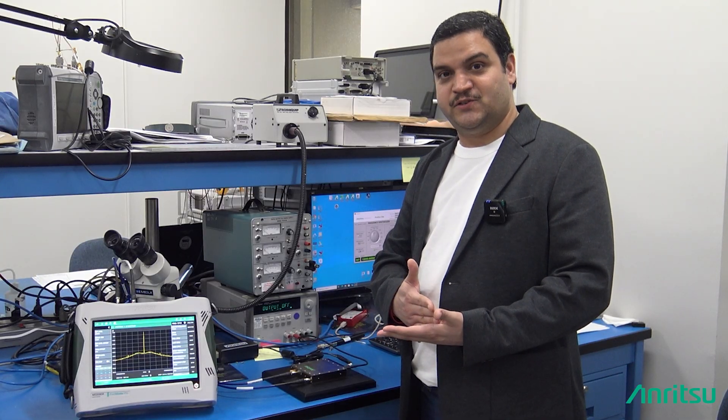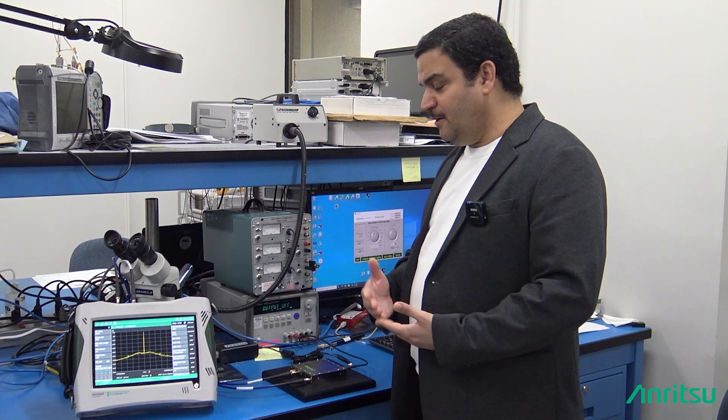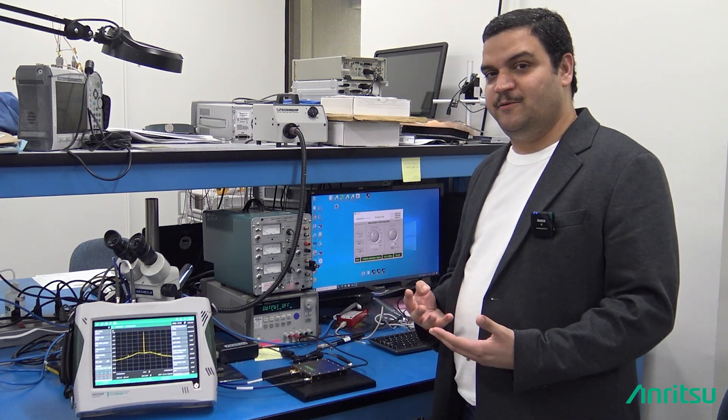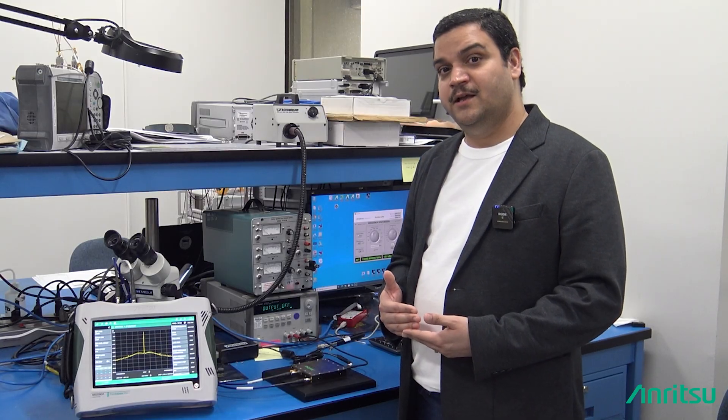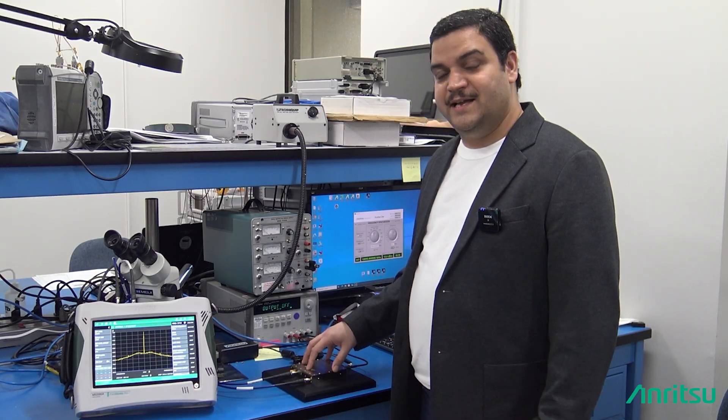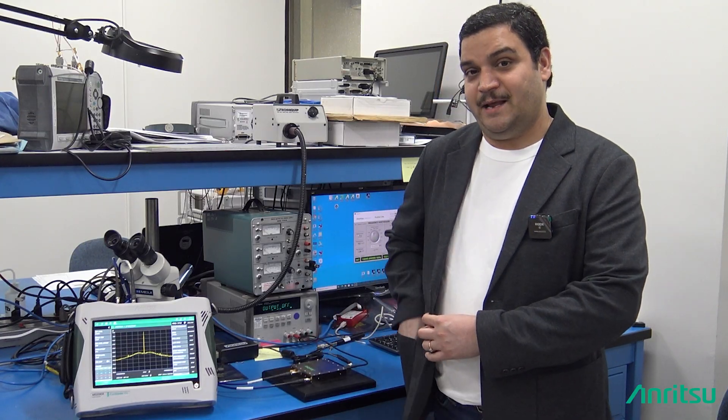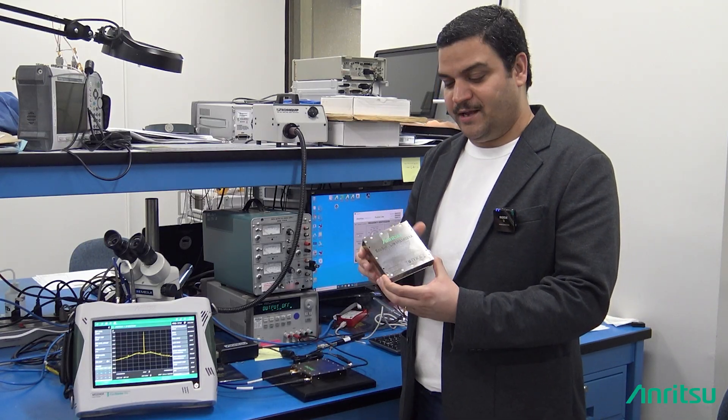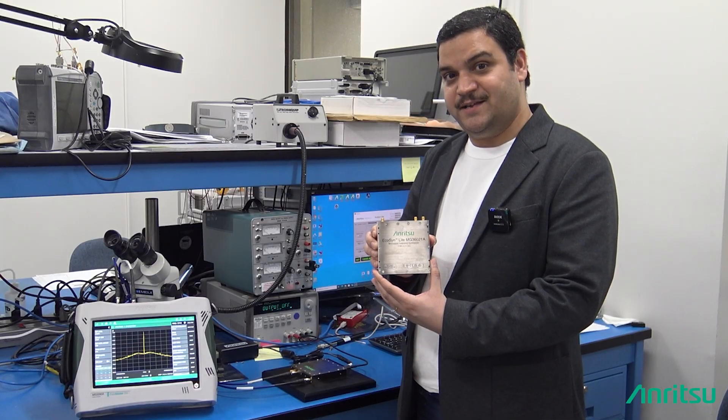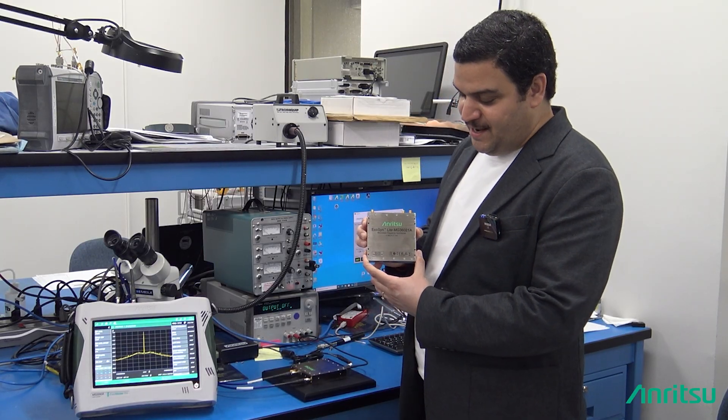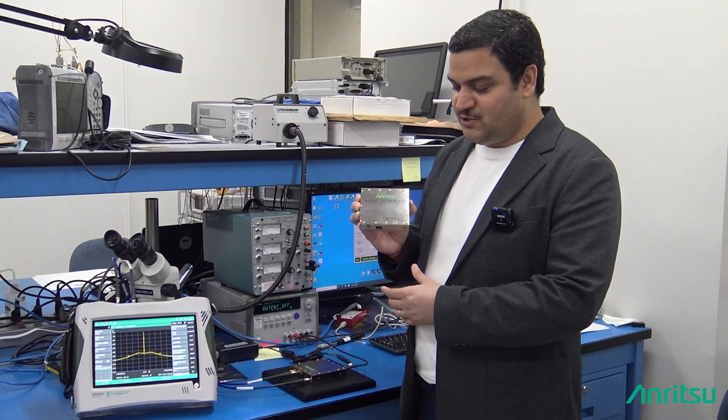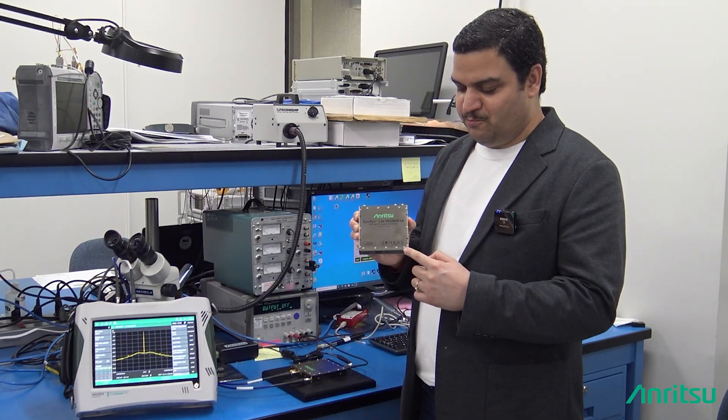The four main parameters that we really boast about and are proud of: number one is the small size of this product. It is so small that I'm actually carrying one in my pocket, and this by the way is not a dummy, it's a real unit. As you can see, the dimension is so small - it's 4 inch by 4 inch by 0.8 inch.